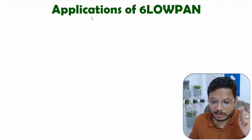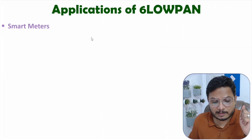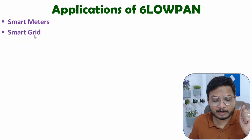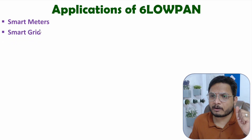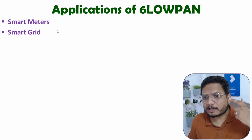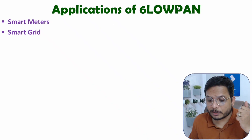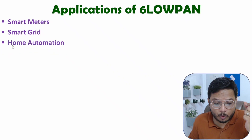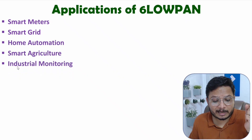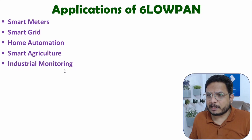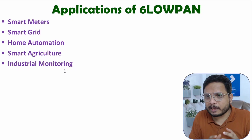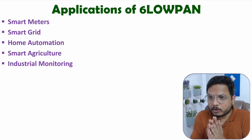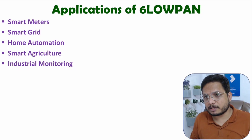Applications of 6LoWPAN: it is widely used in smart meters and smart grids, especially in Canada and the US. Other applications include home automation, smart agriculture, and industrial monitoring. That covers the complete details on 6LoWPAN. If you have anything to share, please note it in the comment section. Thank you so much for watching this video.